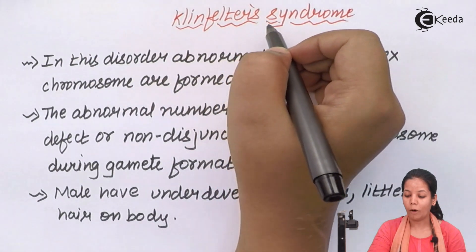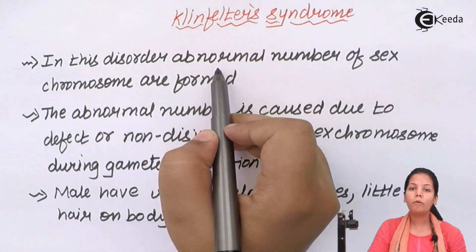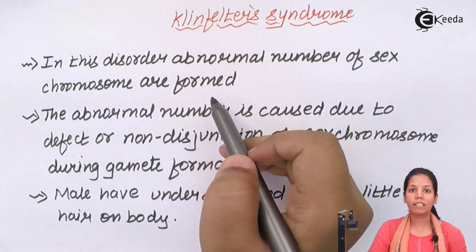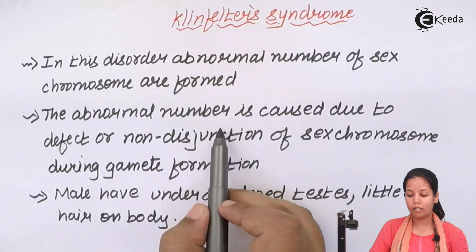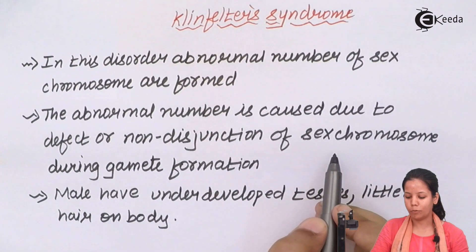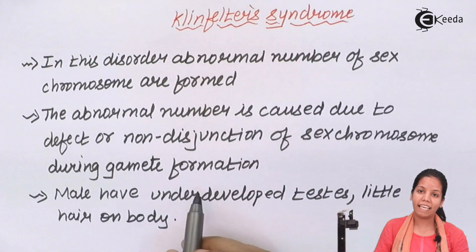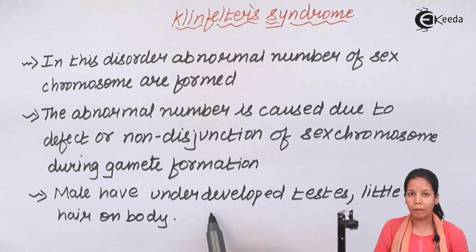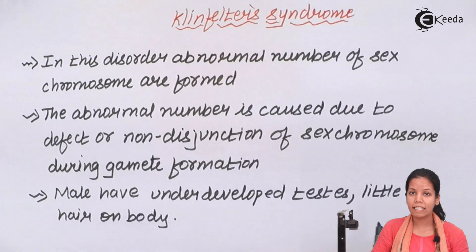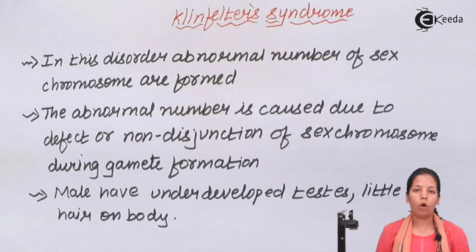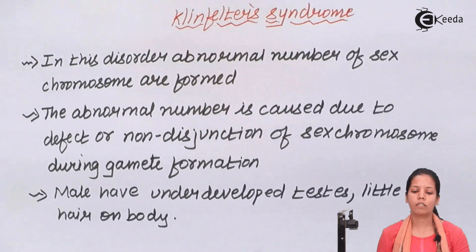In this disorder, an abnormal number of sex chromosomes are formed, that is XXY. This is caused due to defects or non-disjunction of sex chromosomes especially during gamete formation. This can lead to a number of problems like males having underdeveloped testes, little hair on their body, infertility in the long run, and also mental retardation.